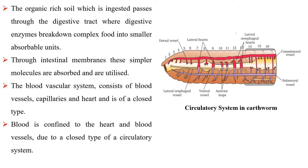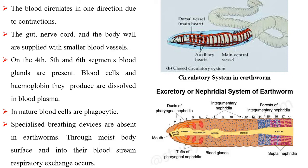Through intestinal membranes these simpler molecules are absorbed and utilized. The blood vascular system consists of blood vessels, capillaries and heart and is of a closed type. Blood is confined to the heart and blood vessels due to a closed type of circulatory system. The blood circulates in one direction due to contractions.